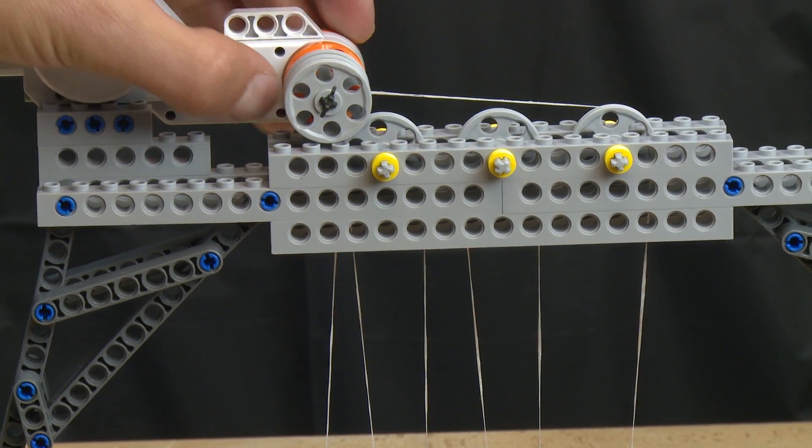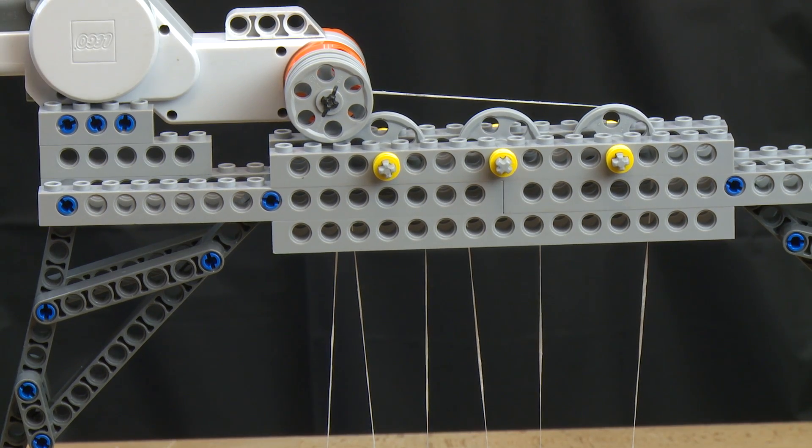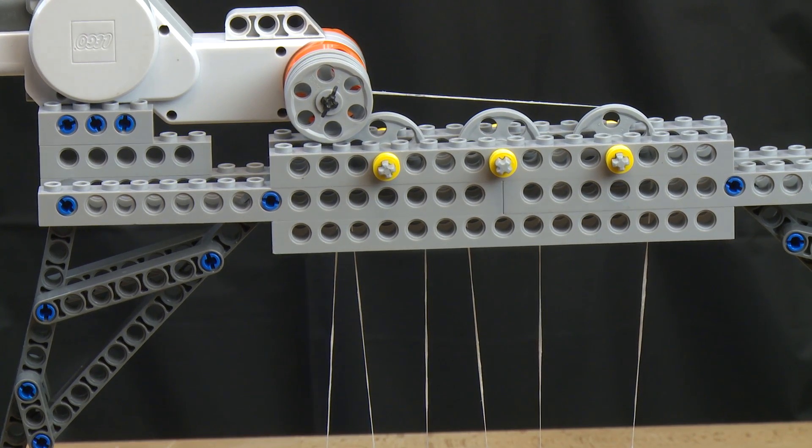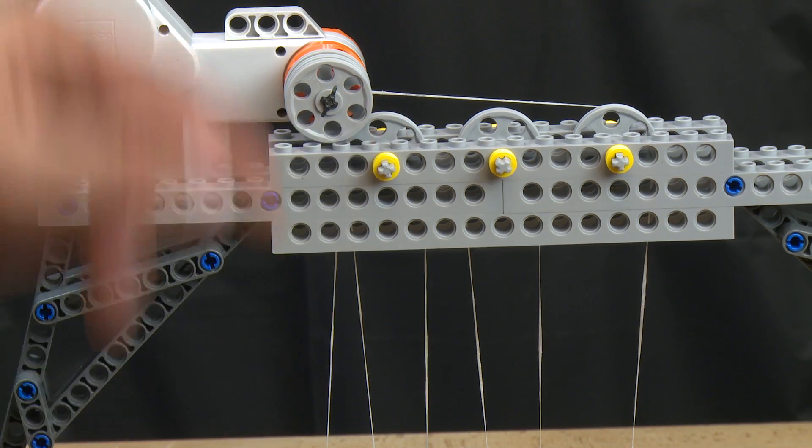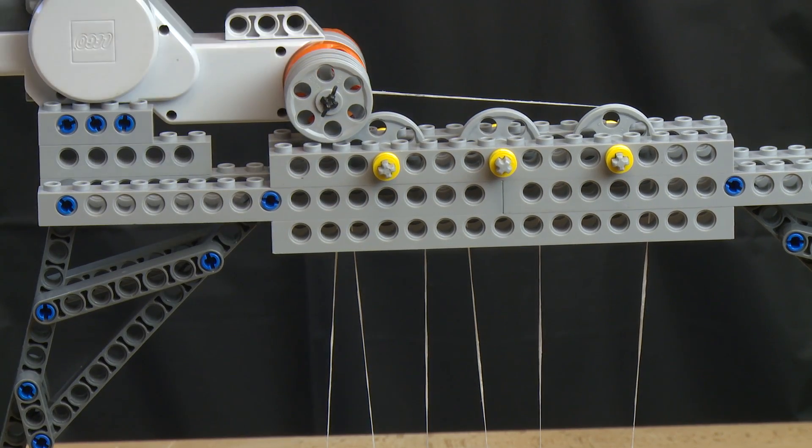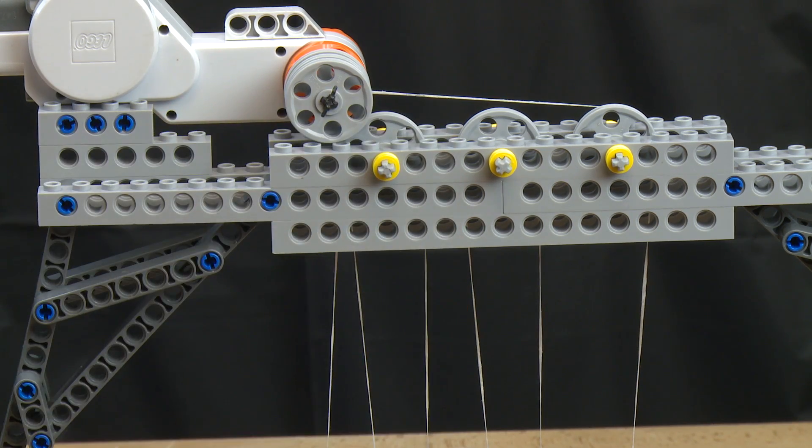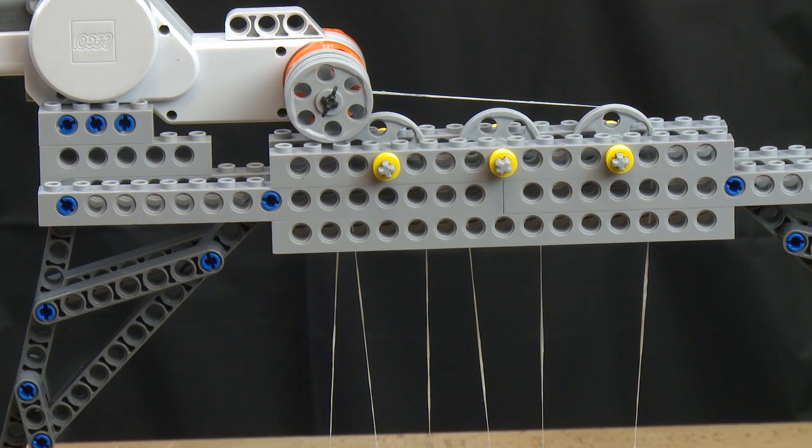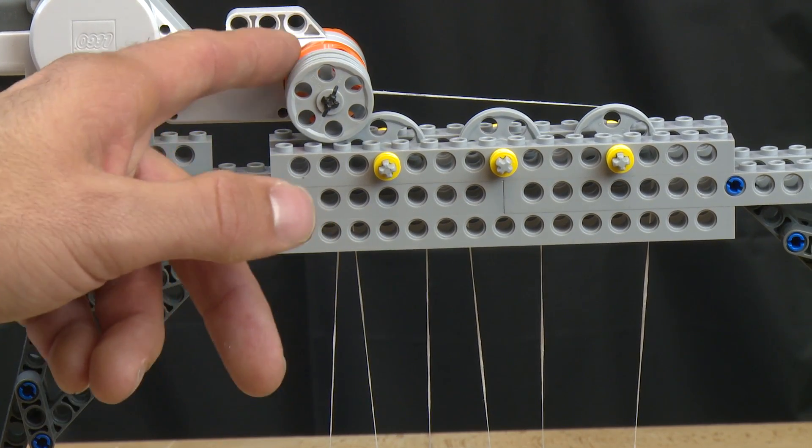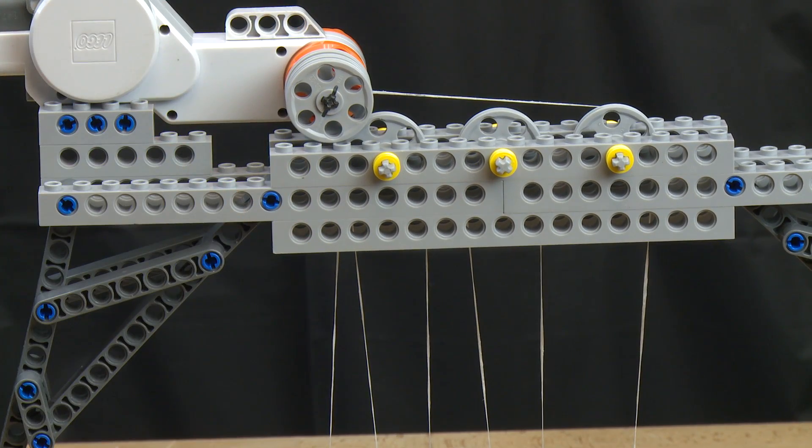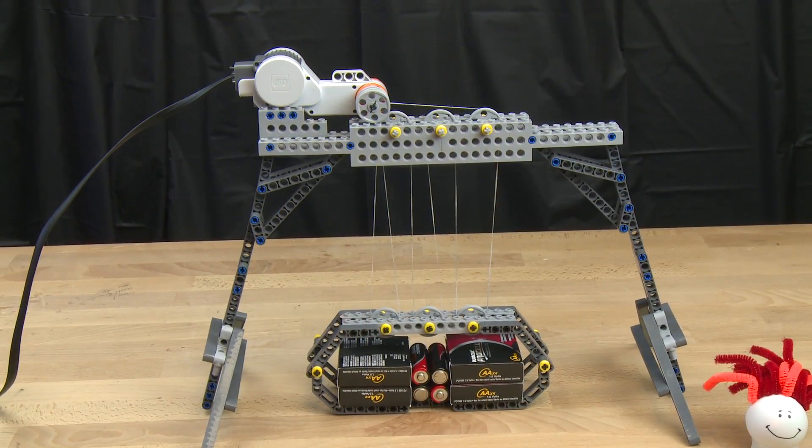And so then what we'll be doing is we're actually going to be taking up the string on the first pulley from the motor. The strings are going to go from the motor down to the first pulley, come back up, go over the pulley down, back up, over the next pulley down, back up and then back to the motor again. And what that should do is it should allow us to have a much more even lift. And so let's see if that works.